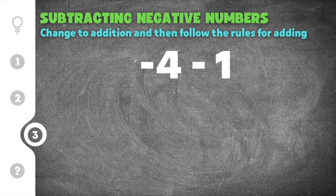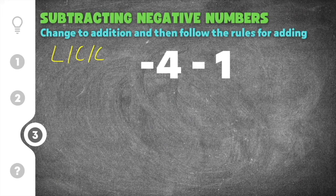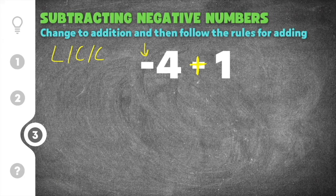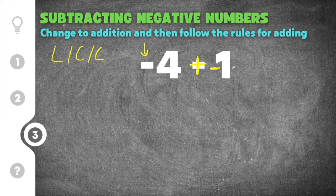Our last practice problem gives us negative four minus one. We do leave change change: we leave the negative four the same, change the minus into a plus, and change the positive one into a negative one. I'm going to rewrite this as negative four plus negative one.